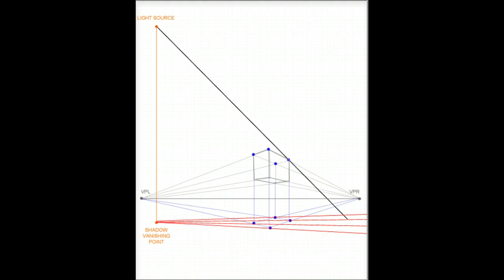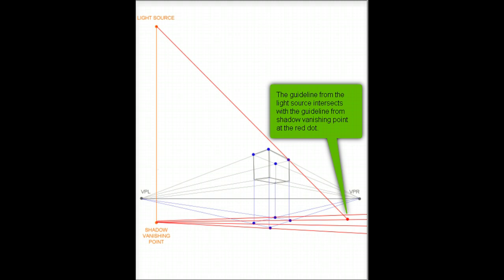This is where it gets tricky. You want to make sure that the guidelines are where they intersect. The guidelines from the light source will intersect with the guideline from the shadow vanishing point. So this point is directly above this point. So they will intersect here, this line and this line will intersect. And that's where you'll draw one point.